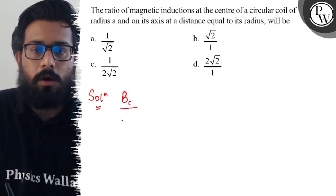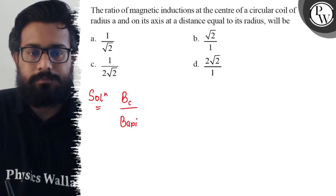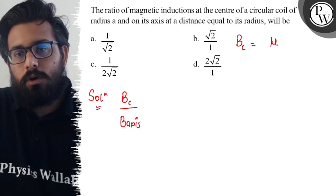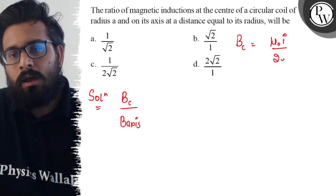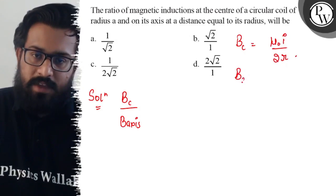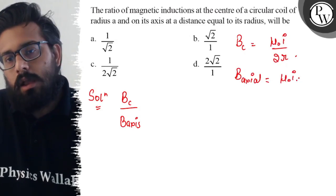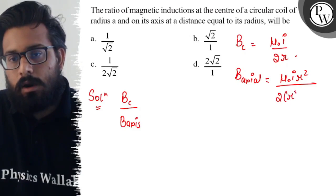Now for the center we have a direct formula: Bc = μ₀I upon 2r. But for the axis we have a formula of Baxis = μ₀Ir² upon 2(r² + x²)^(3/2).